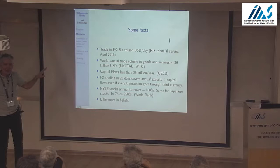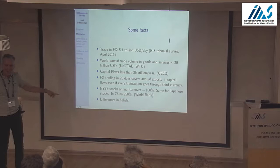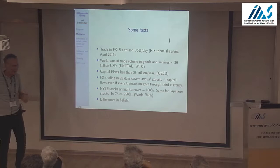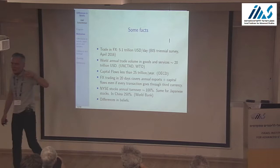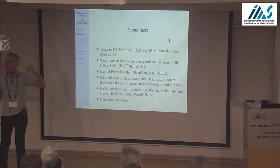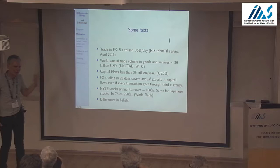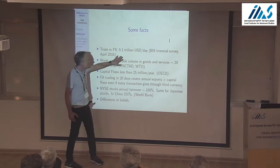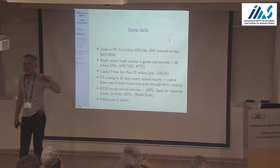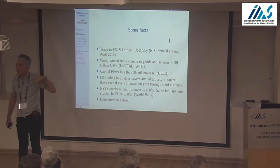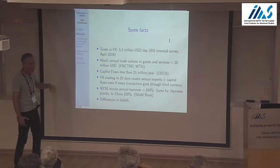Here are some facts. If you look at the amount of foreign exchange trading in just the G7 currencies, they trade about five trillion dollars a day — 2016 numbers, since the BIS only publishes that every three years. Five trillion dollars is a lot of money. I want you to figure out how much of that trading could be fundamental — people who really need to exchange foreign exchange.